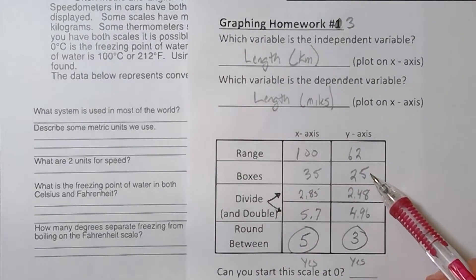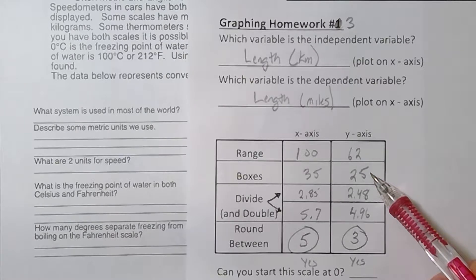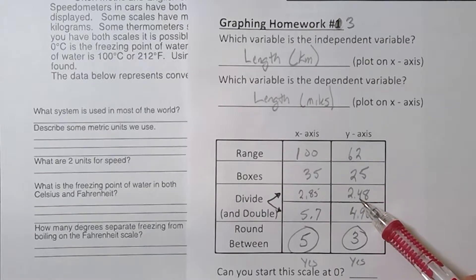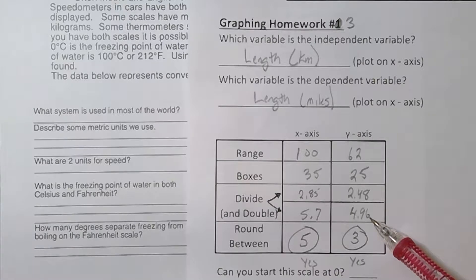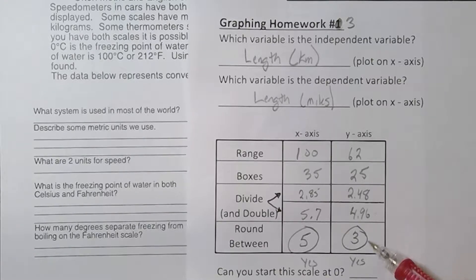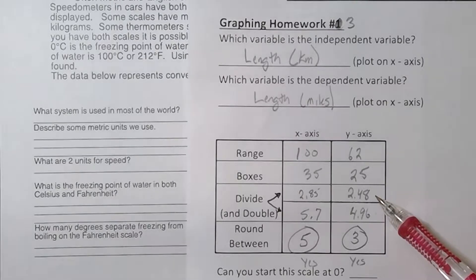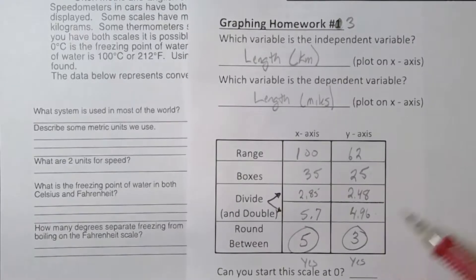I'm looking for a value between 2.48 and 4.96. I'm going to go with 3. You could go with 2.5 if you'd like, but I'm going to go with 3. Both of these scales can definitely start at zero.